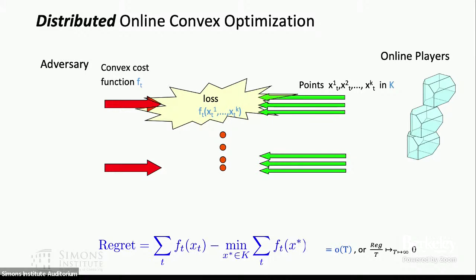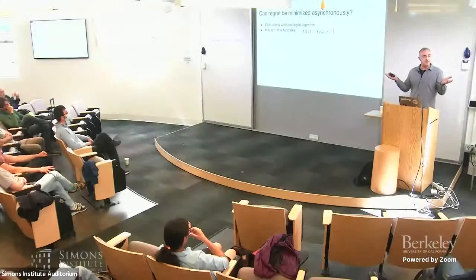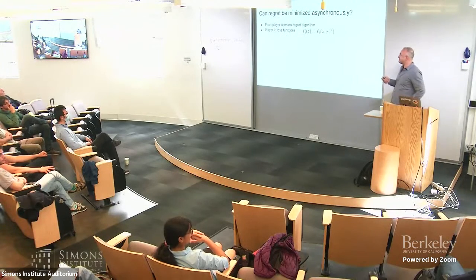Can regret be minimized asynchronously? Let's say each player uses a no-regret algorithm, maybe gradient descent or mirror descent. Each player has a loss function given what all the other players are doing — this is a convex function by construction. If they each minimize regret, will it converge to the global optimal? The answer is no, and here is a surprising example. Think of this loss function with two scalar variables. Consider two players that alternate playing minus one and one — they each minimize regret, because instantaneously they're doing the best thing. But the whole thing fails to converge to global optimality.